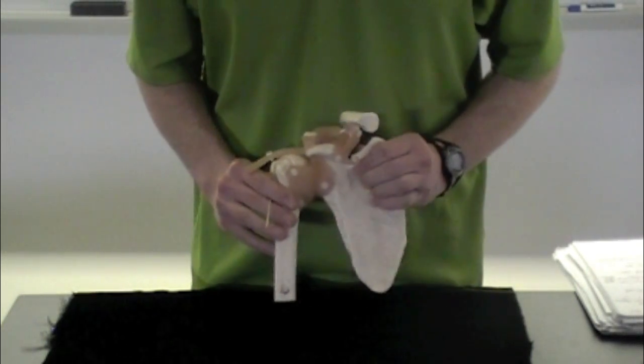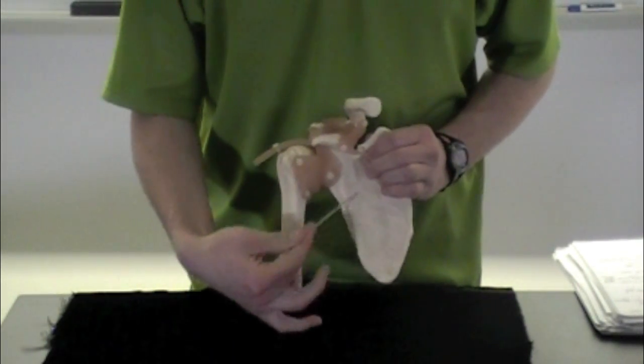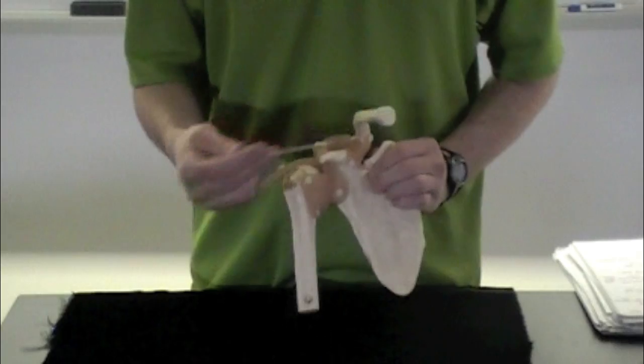Hi, we're going to be going over the ligaments of the shoulder here. For your bones, you can see here your scapula, your clavicle, and your humerus.